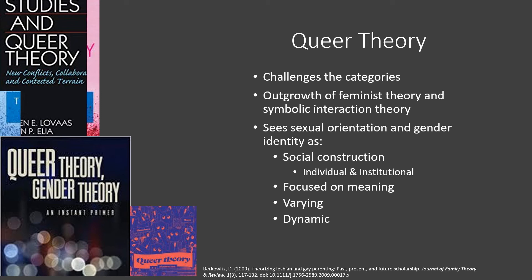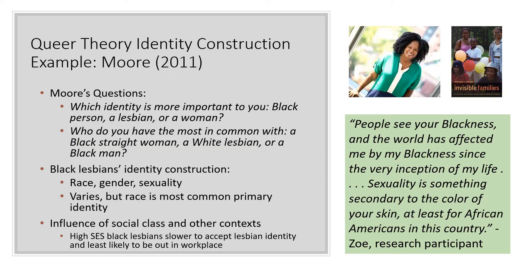Queer theory recognizes that identity can also be dynamic — how I'm identifying in terms of sexual orientation today might not be how I did in the past or will in the future. Mignon Moore wrote a book called 'Invisible Families,' based on qualitative research with Black lesbians and how they constructed identity. This is a nice example of queer theory ideas: identity as socially constructed, individual and institutional, varying, dynamic, and focused on meaning.